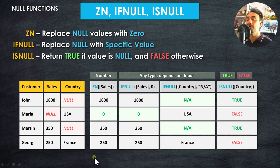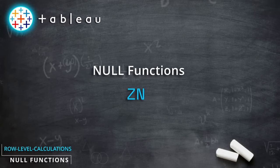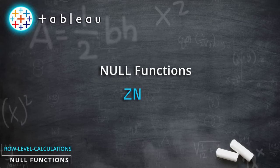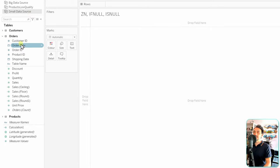So we have three functions — three tools — to manipulate or check null values inside our fields, and they're really useful to improve the quality and completeness of your visualizations. Now let's go back to Tableau and start practicing them.